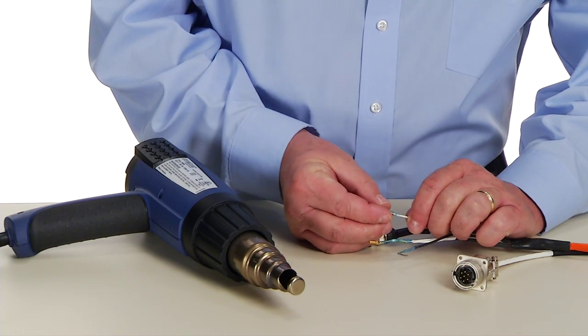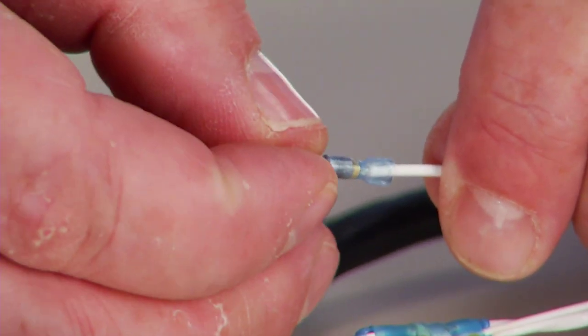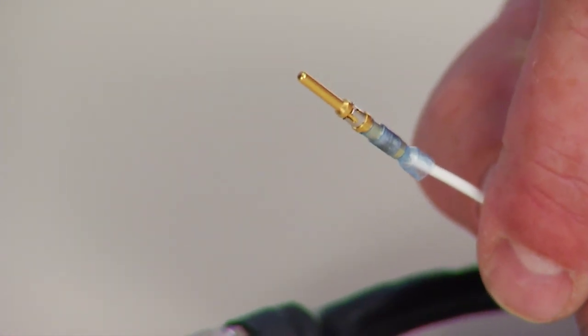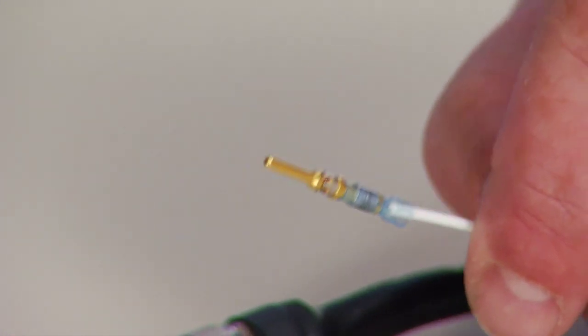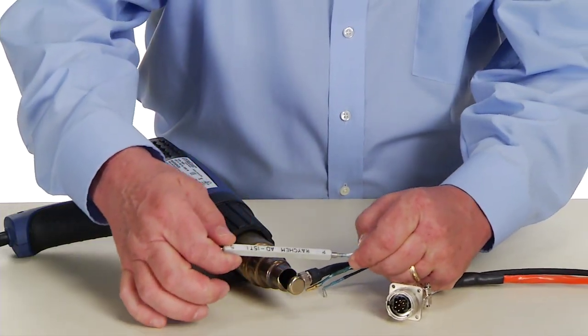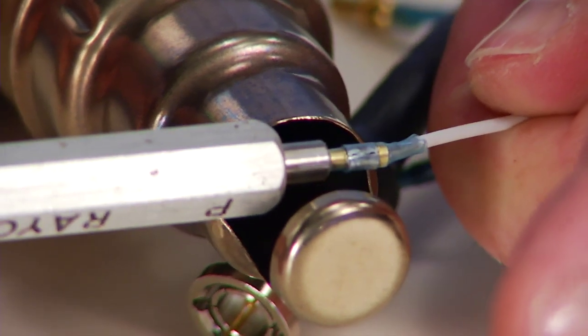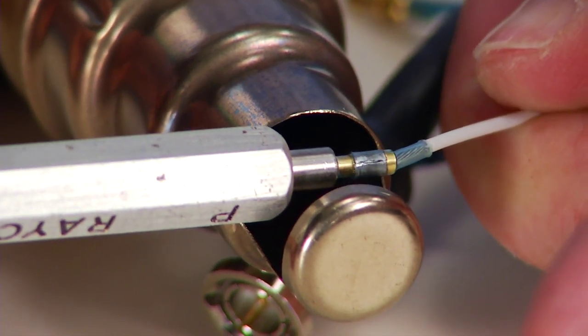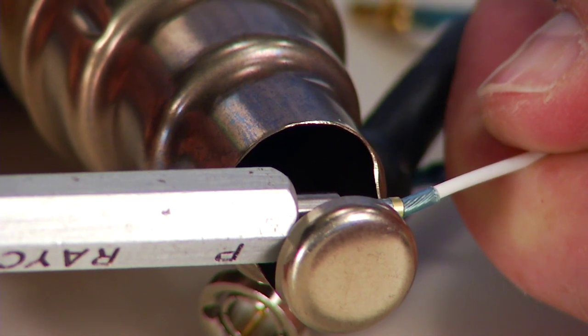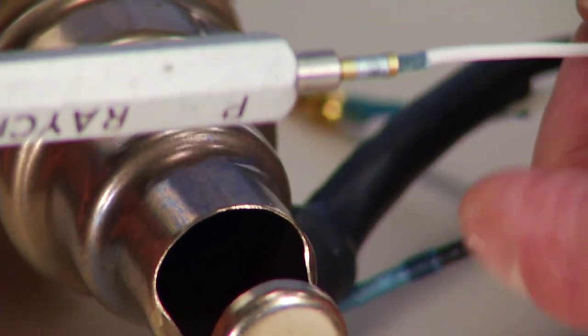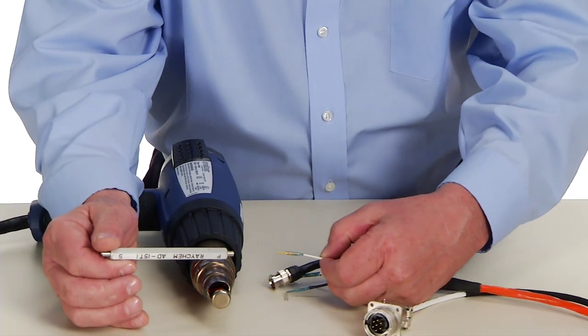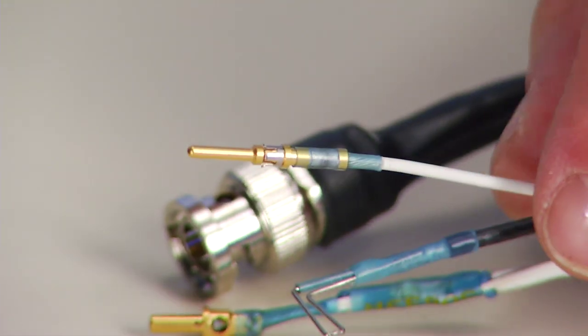Slide the power contact over the 18-gauge wire. Using the repair wand, place the solder contact into the reflector and heat until the solder ring melts, flows, and wets to the cable conductor. Allow the contact to cool before handling.